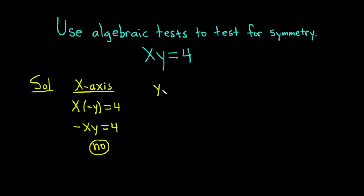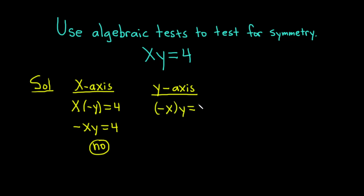Let's test now for y-axis symmetry. To test for y-axis symmetry, you replace x with negative x in your equation. If you get the same thing, the answer is yes, you have y-axis symmetry. If you don't, the answer is no. Replacing x with negative x, we get minus xy equals 4, which is not equal to the original equation. The answer is no — we do not have y-axis symmetry.